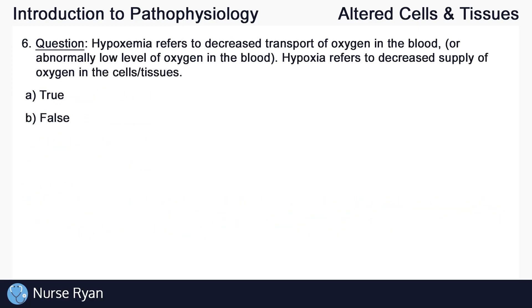Question number 6: hypoxemia refers to decreased transport of oxygen in the blood, or an abnormally low level of oxygen in the blood. Hypoxia refers to decreased supply of oxygen in the cells and tissues. The answer here is A — true. These are the correct descriptions of hypoxemia and hypoxia.